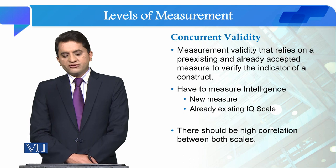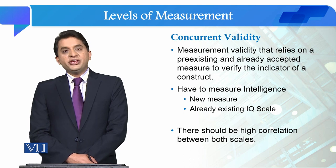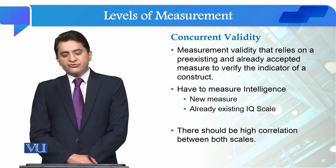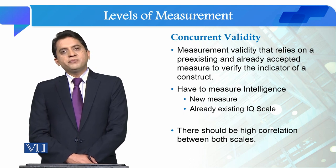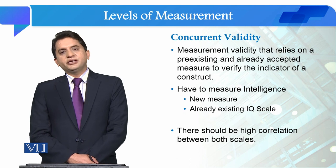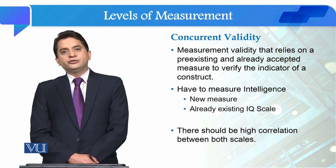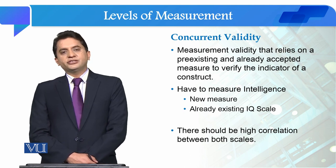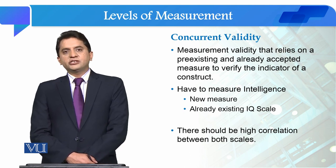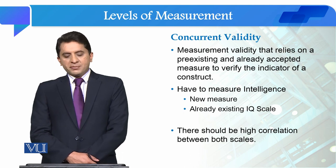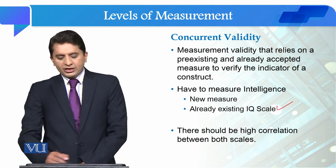Let's see concurrent validity first. It's a type of measurement validity that relies on a pre-existing and already accepted measure to verify the indicator of our construct. For instance, you have an IQ or intelligence measure for which you have to develop a scale, and you already have an IQ scale.